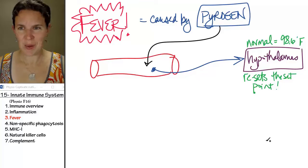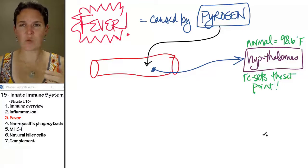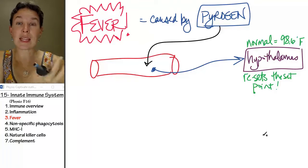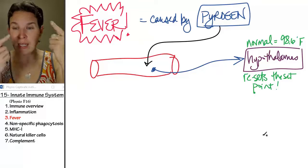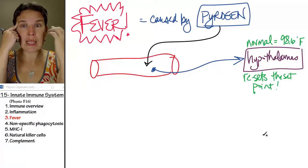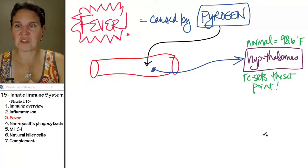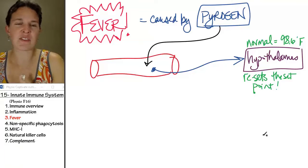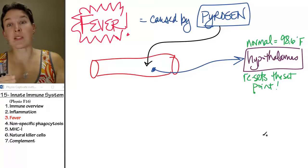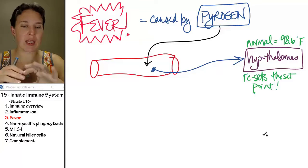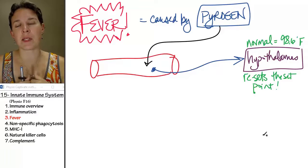So 98.6 is where incoming information from thermoreceptors in the hypothalamus says, oh yeah, it's 98.6. This is good. If it gets up to 99.5, let's cool things down a little bit. If it gets down to 97, let's warm things up a little bit. And we have this whole system mediated by the hypothalamus.